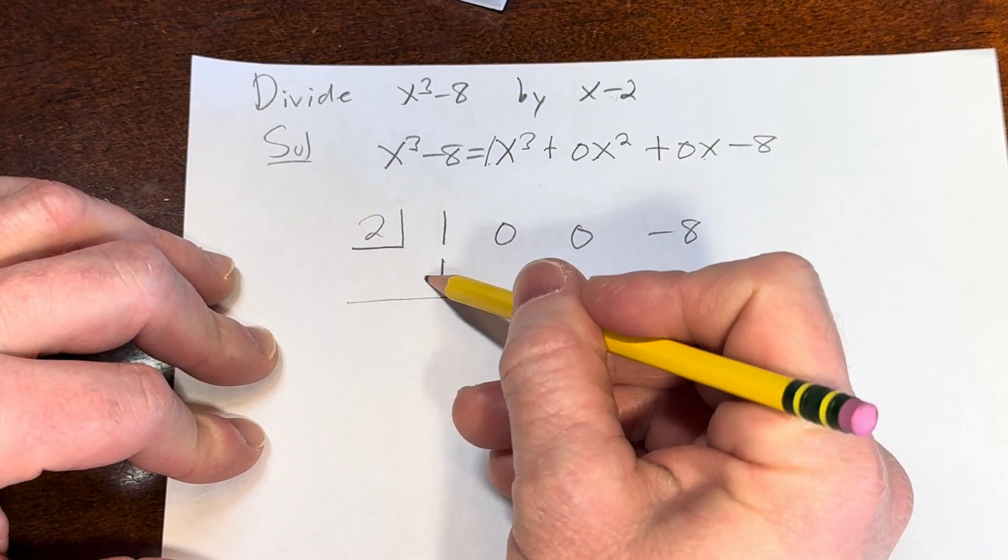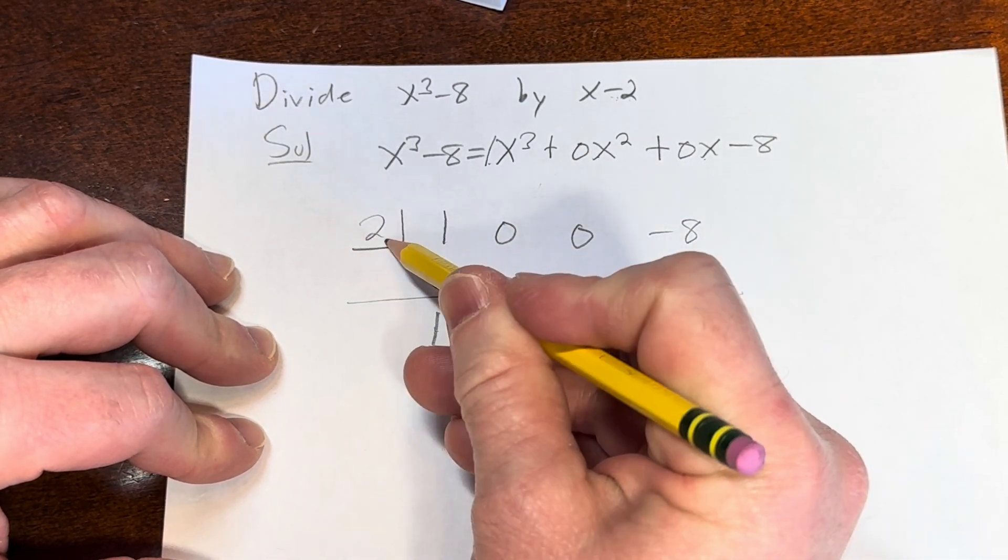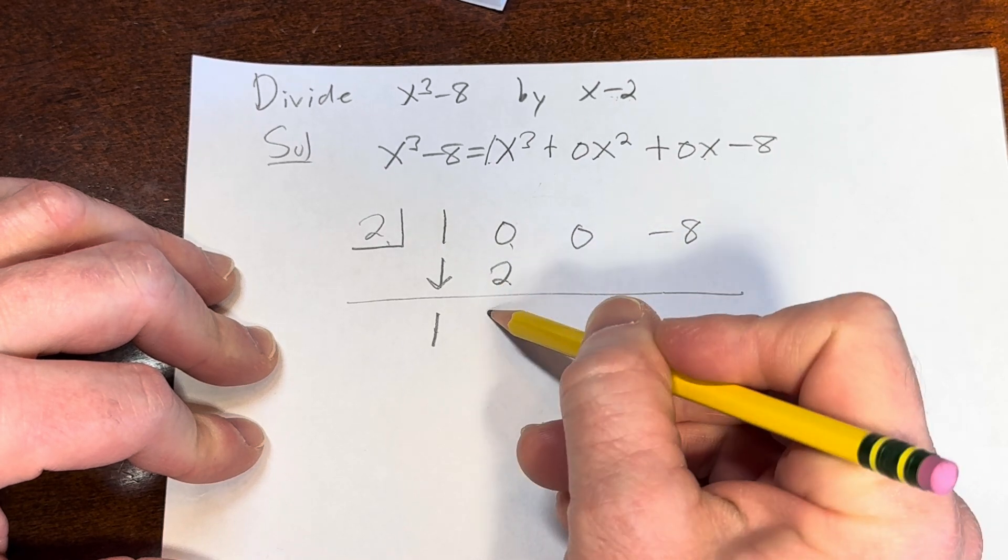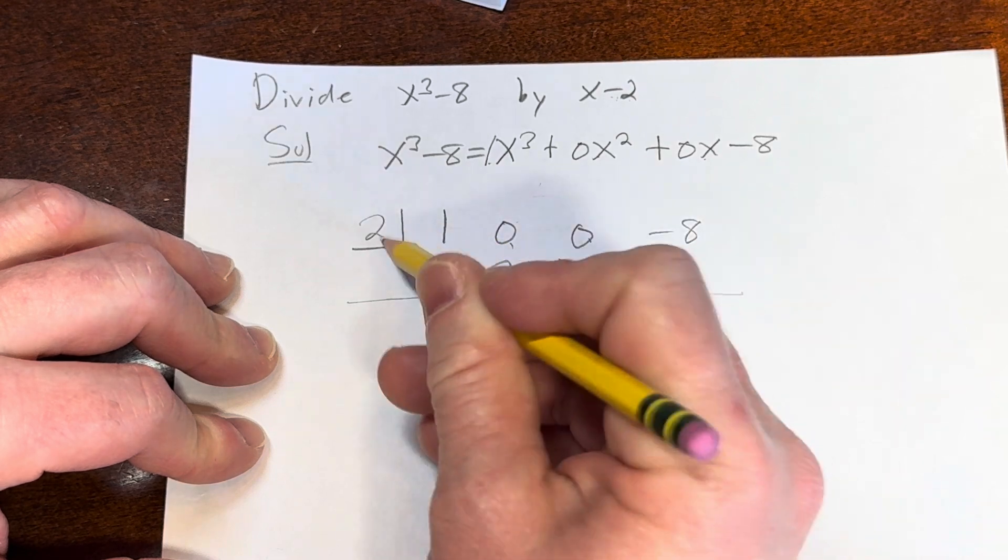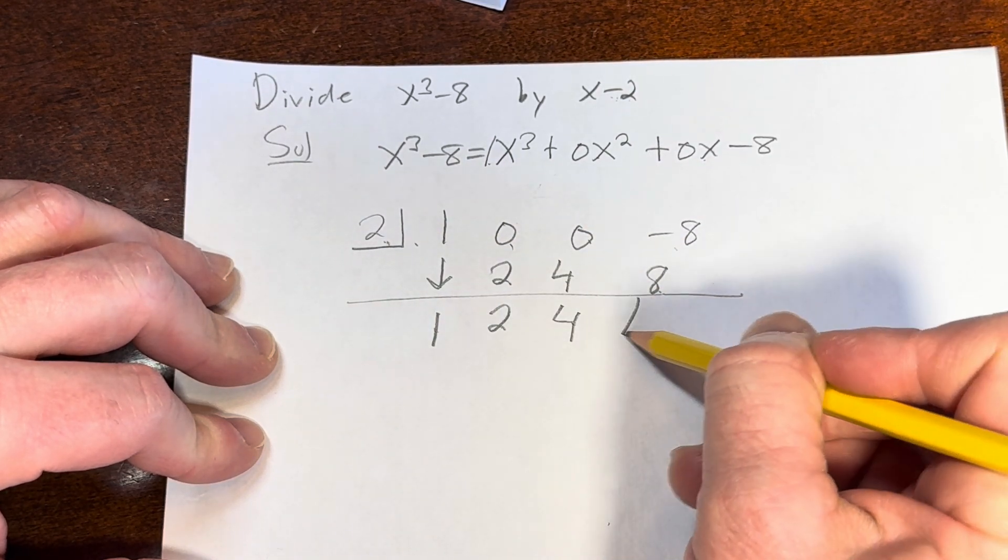And now we start the process. We'll bring down that 1. 1 times 2 is 2. We add and we get 2. 2 times 2 is 4. We add and we get 4. 4 times 2 is 8. We add and we get 0.